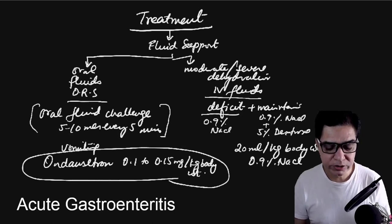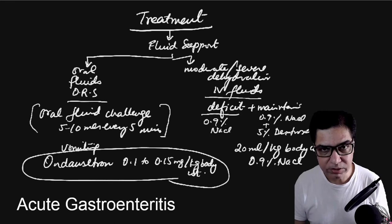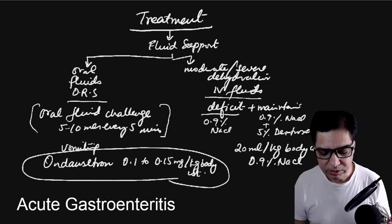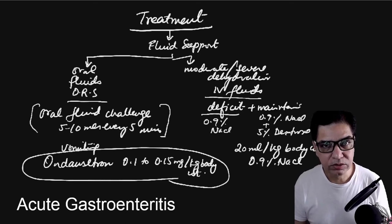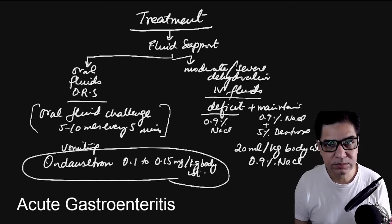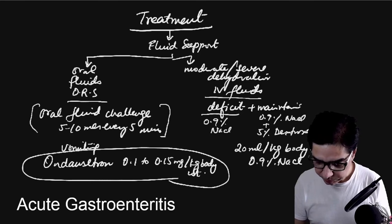To summarize treatment: ondansetron for vomiting; ORS or Dioralyte for mild dehydration; IV fluids (deficit plus maintenance) for moderate to severe dehydration. Ondansetron is a 5-HT3 receptor antagonist and is the only recommended antiemetic — drugs like metoclopramide or domperidone that can prolong the QT interval are not recommended. For protozoal infections such as giardiasis or amoebiasis, metronidazole is the specific treatment.